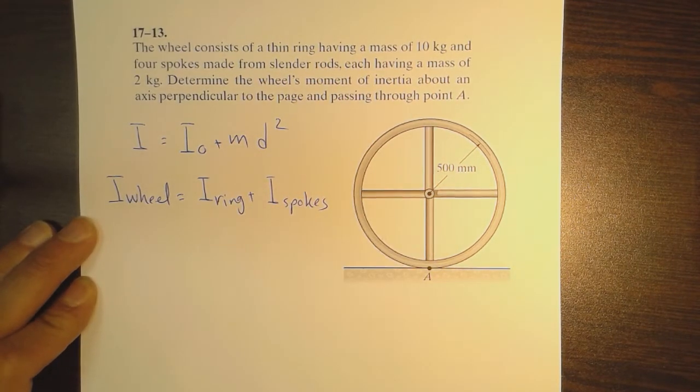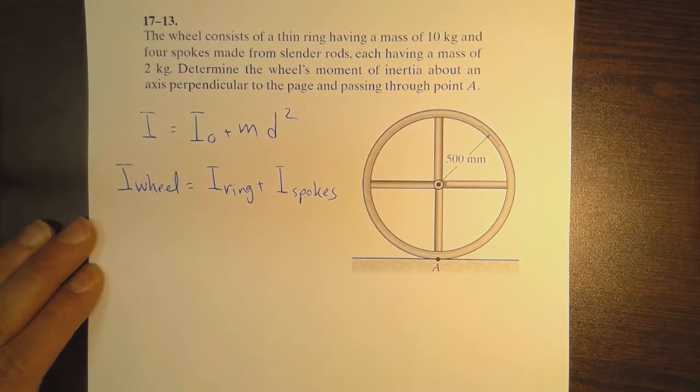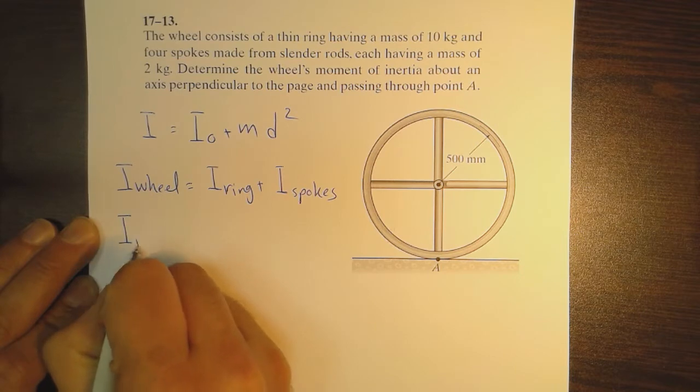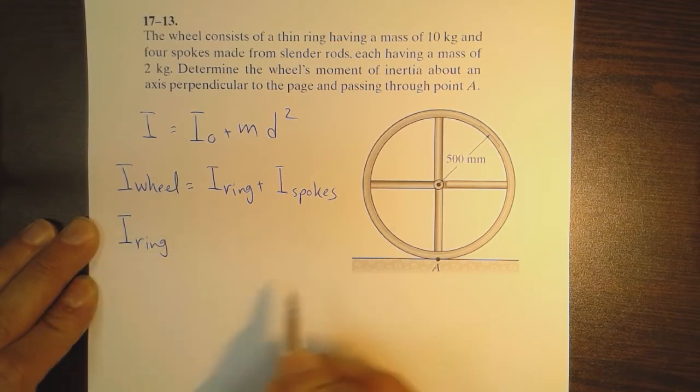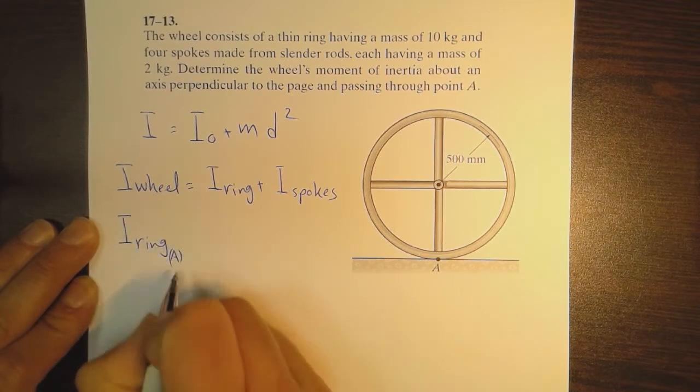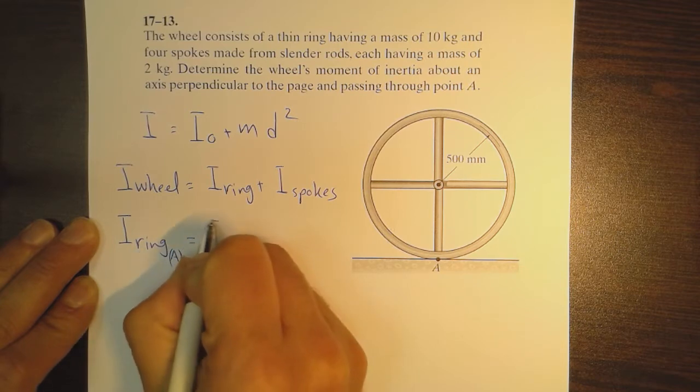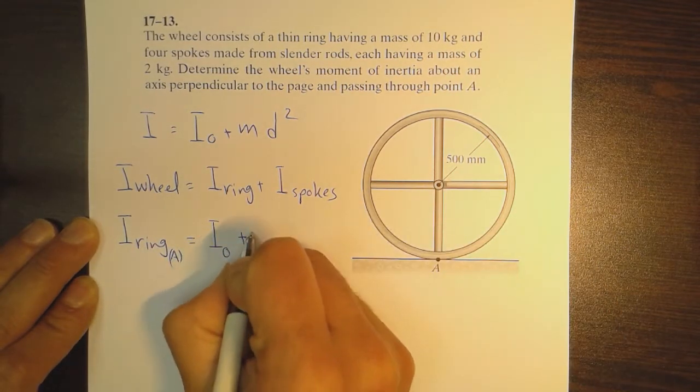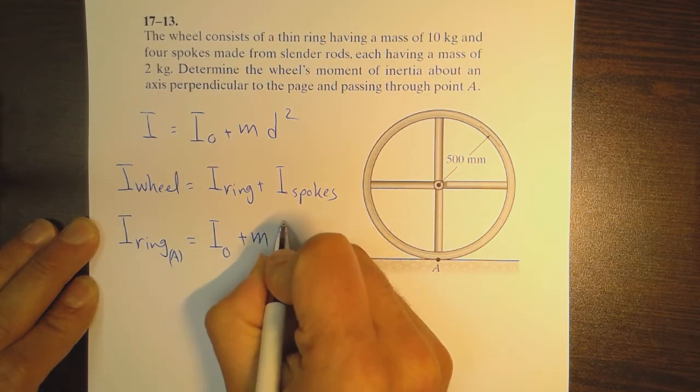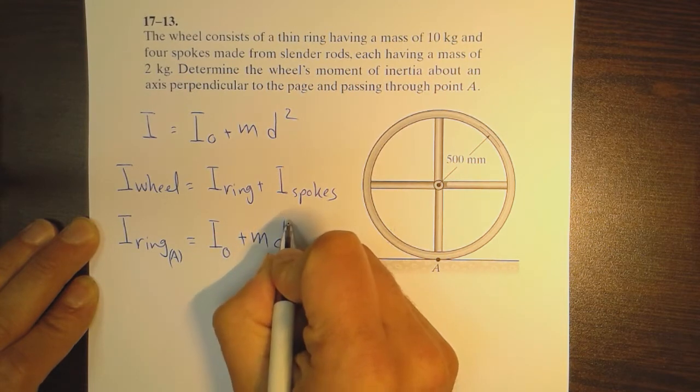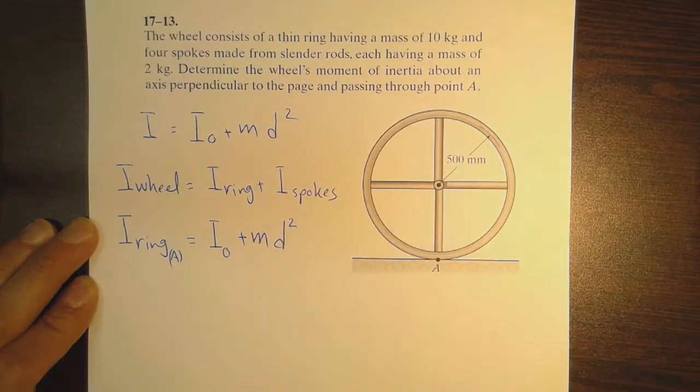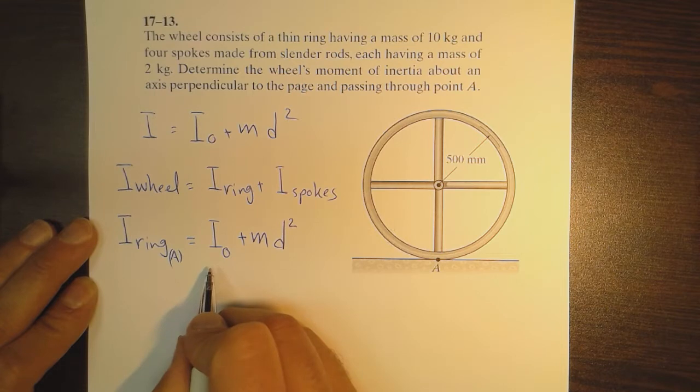For the ring, its moment of inertia around point A is equal to the moment of inertia around its centroid plus its mass times the square of the distance between its centroid and point A.